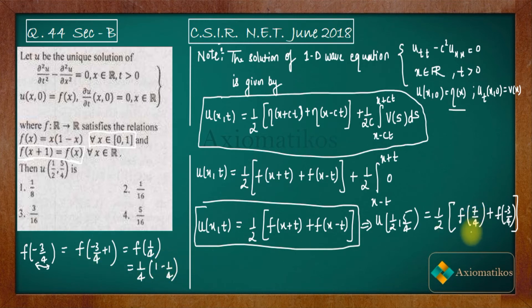Now f of 7/4 also lies outside [0,1]. So you have to bring it back. So what you will do? You will just write 7/4 as 1 plus 3/4. So see it is 7/4. Now according to what we have done, we have written it as 1 plus 3/4.